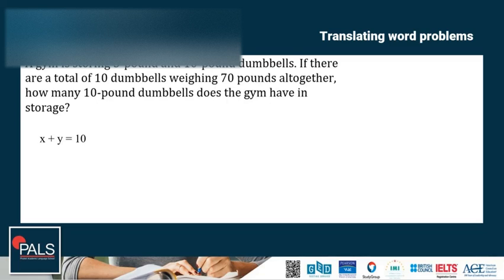Now, because each 5-pound dumbbell contributes 5 pounds to the total and each 10-pound dumbbell contributes 10 pounds, we have 5X plus 10Y which is equal to 70 pounds because the total weight is 70 pounds. The question asked only for the number of 10-pound dumbbells, which is Y, so we can eliminate the X first because all we need to find is the Y.